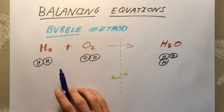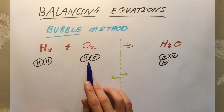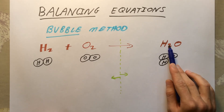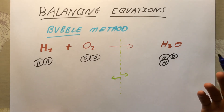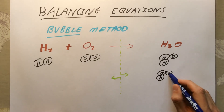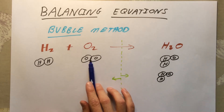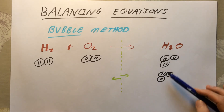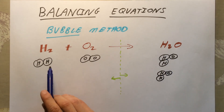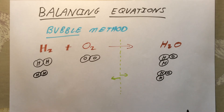What you must spot is that on the right-hand side we have only one oxygen atom, whereas on the left-hand side we have two oxygen atoms. We need another oxygen on the right-hand side. We can't just add another oxygen to the formula, because that would change it to H₂O₂, which is hydrogen peroxide — a toxic chemical. Instead, you must double up the entire formula, adding a whole other lot of water, H₂O, on the right-hand side.